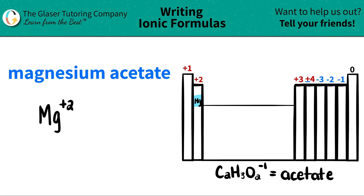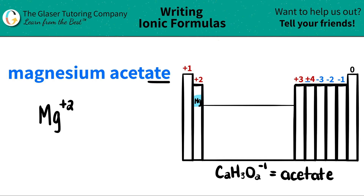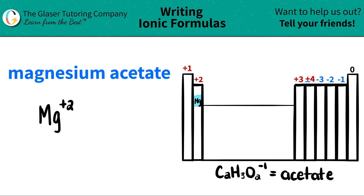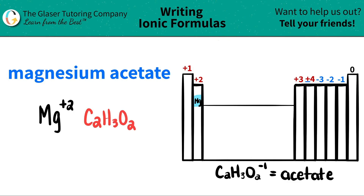So I'm going to write down that I have Mg with a plus two charge. The next component is acetate. I see that it has an 'ate' ending, and all 'ate' endings are polyatomic ions. Polyatomics are never going to be on the periodic table — they need to be memorized. Acetate is C₂H₃O₂, and you may see it in other forms, but in this case we'll use C₂H₃O₂ with a negative one charge.